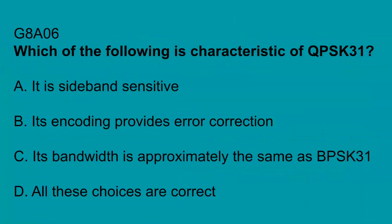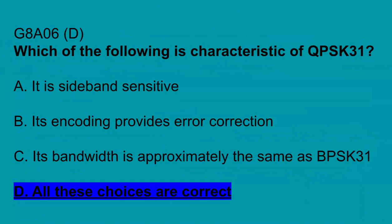G8A06: Which of the following is characteristic of QPSK31? All these choices are correct: it is sideband sensitive, its encoding provides error correction, and its bandwidth is approximately the same as BPSK31.